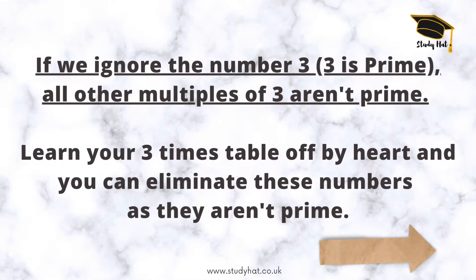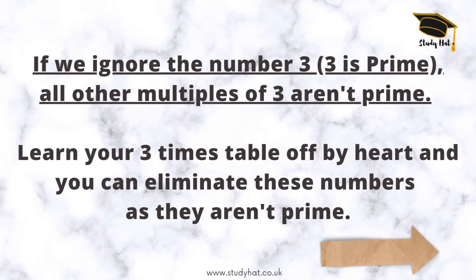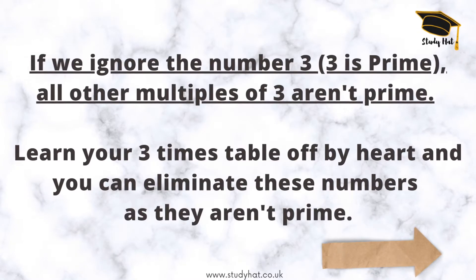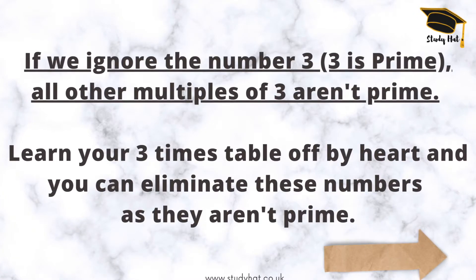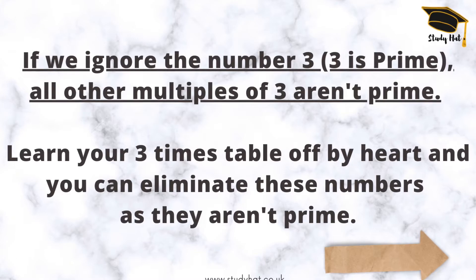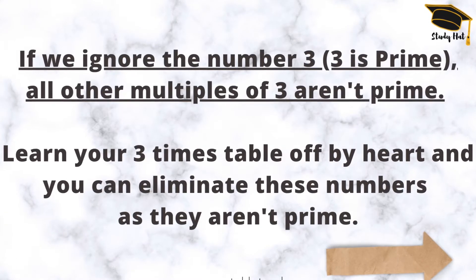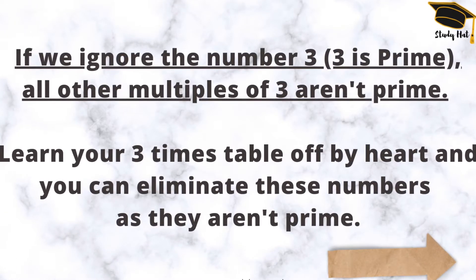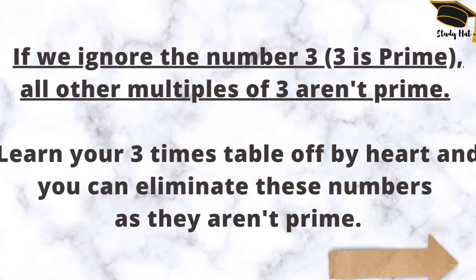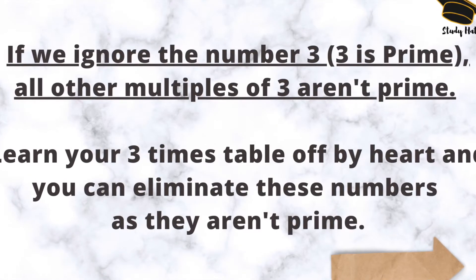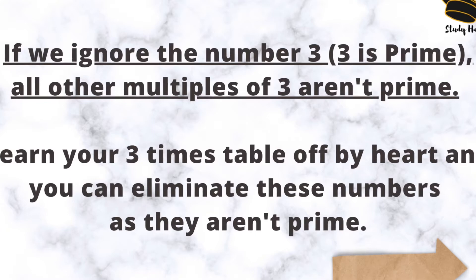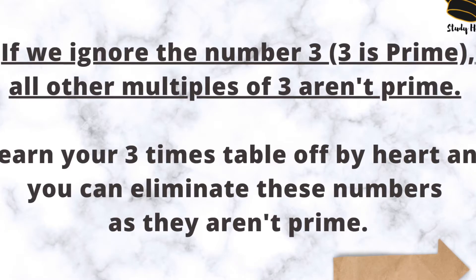So if we ignore the number three — three is prime — all the other multiples of three are not prime. All you need to do is learn your three times table off by heart and you can eliminate these numbers as they're not prime. So 6, 9, 12, 15, 18, 21 — the list goes on. None of those numbers are prime.